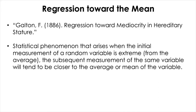Another phenomenon closely related to the placebo effect is called regression toward the mean. This is a statistical phenomenon that arises when the initial measurement of a random variable is extreme from the average—the subsequent measurement of the same variable will tend to be closer to the average or mean. We can think of disease as an extreme health condition away from overall health. When an intervention or drug is applied to treat a disease, any improvement can be the real effect of the intervention or simply due to regression toward the mean.